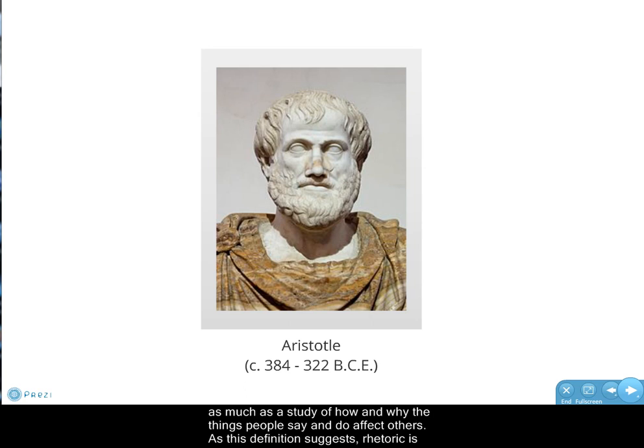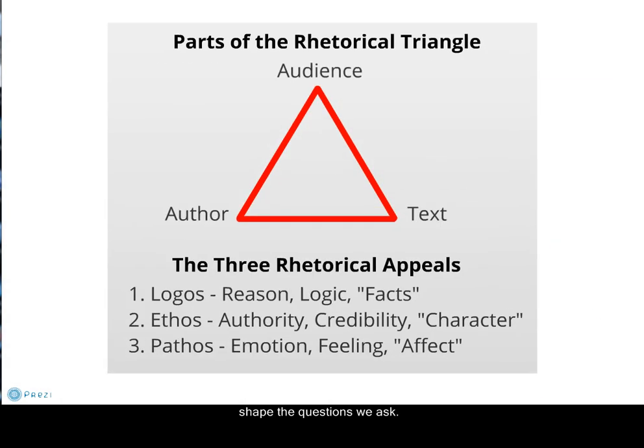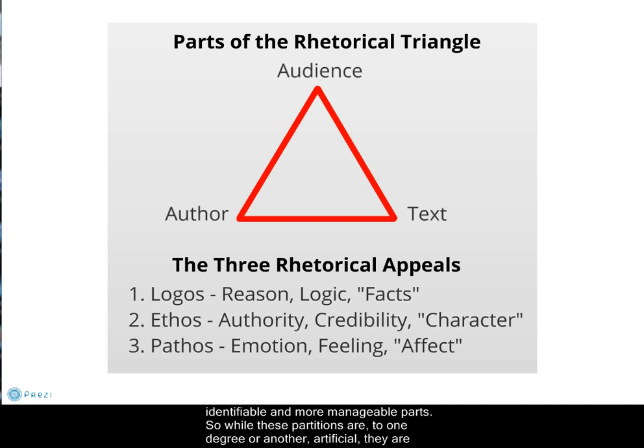As this definition suggests, rhetoric is a very broad term. So to accomplish any sort of real analysis, we must impose some structure and guidelines that will shape the questions we ask. That is where the rhetorical triangle and rhetorical appeals come in. They help shape and separate rhetoric into identifiable and more manageable parts. While these partitions are, to one degree or another, artificial, they are necessary to begin putting names and meanings to the field of rhetoric.